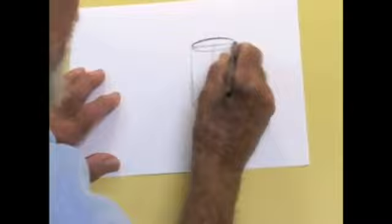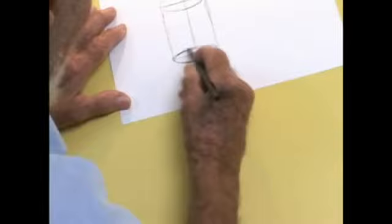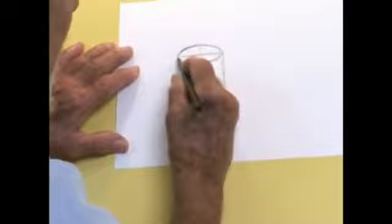And I use the natural movement of the wrist to get the right curvature. I also clean up this line on the bottom. This is basically how we draw a glass.